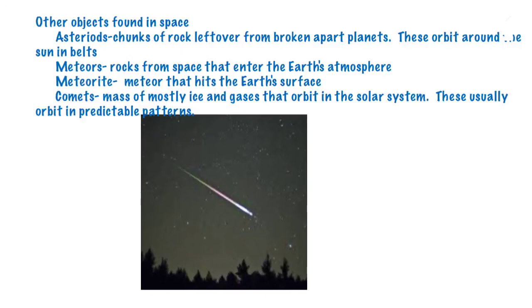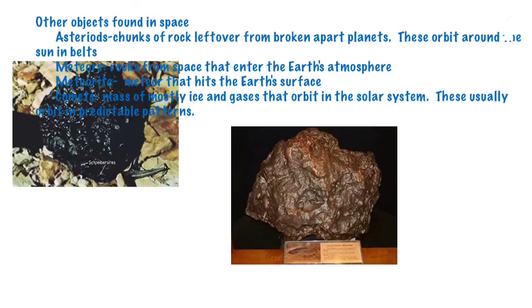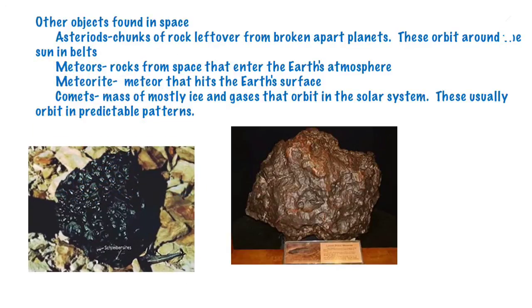Meteors are rocks from space that enter the Earth's atmosphere. Here's a picture of a meteor. Meteorites are meteors that hit the Earth's surface. Here are a couple of examples; they're mostly made up of metal.